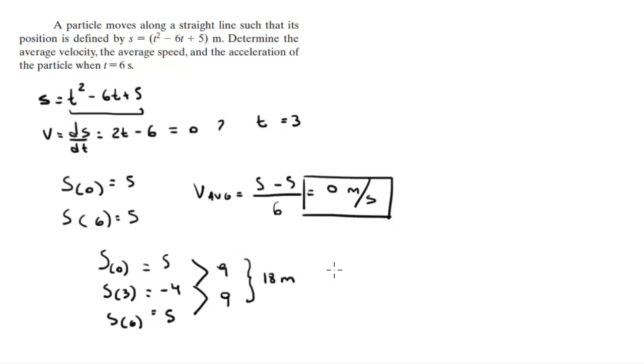If you move 18 meters in a matter of 6 seconds, you know that the average speed is equal to 3 meters per second.